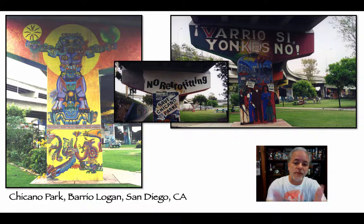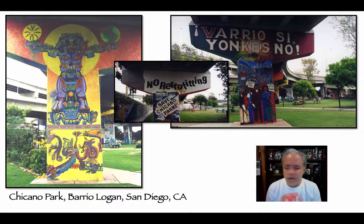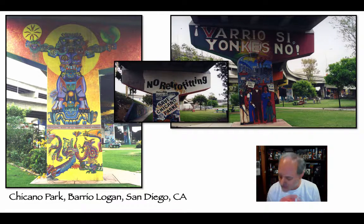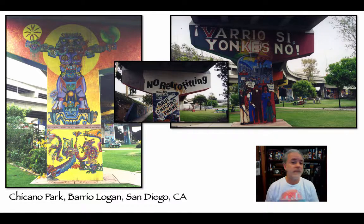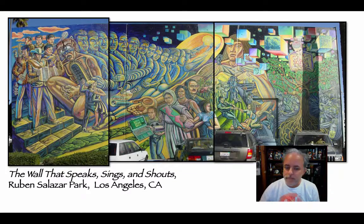In the 1990s, there was a move to retrofit the bridge connecting I-5 and the Coronado Bridge — that was going to ruin a bunch of the murals. The people stood up for the park and the murals again, and ultimately the city had to cover and protect the murals so the retrofitting could go on without any problems for these historic and important pieces of public art. Chicano Park is a great place — you should really check it out if you ever have the chance.